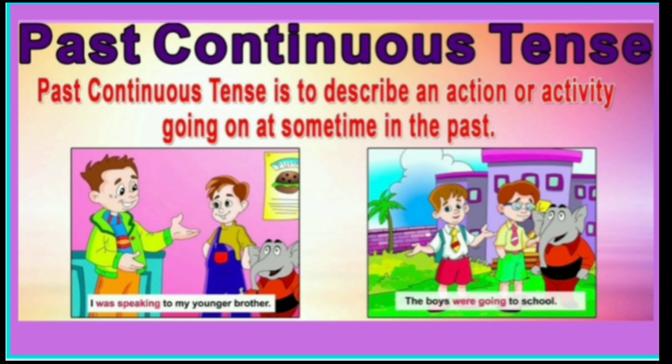Past continuous tense. This tense is used to describe an action or activity going on at some time in the past — an action that was in progress. For making a progressive sentence in the past, we use past continuous tense. For example: 'I was speaking to my younger brother.' 'The boys were going to school.'